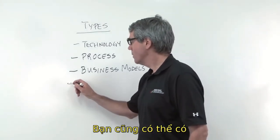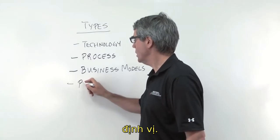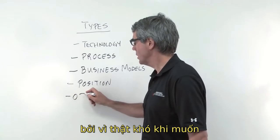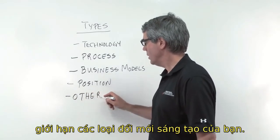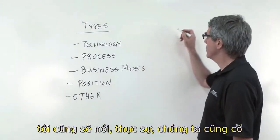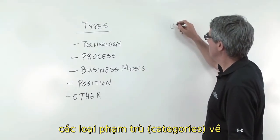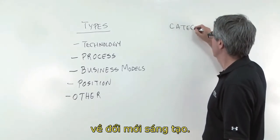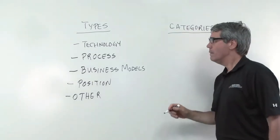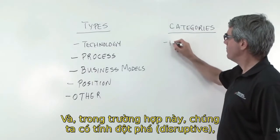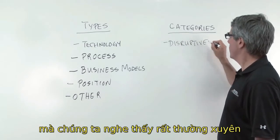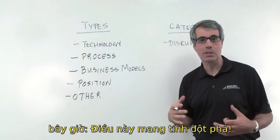So business model innovation is a very interesting one. You can also have positioning — how you position yourself — and then we'll just say 'other,' because it's hard to limit your types of innovation. Now when you have types of innovation, we also have categories of innovation. In this case we have disruptive, which is the word we hear so often now — this is disruptive, this is disruptive.